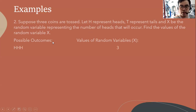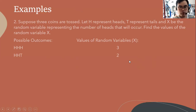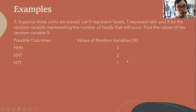The first outcome is HHH — all heads — so the value of X is three. The second possible outcome means we have chosen two heads, so the value is two. The next outcome HTT means we only have one head, so the value is one. The outcome TTT means none of the heads are chosen, so the value is zero.